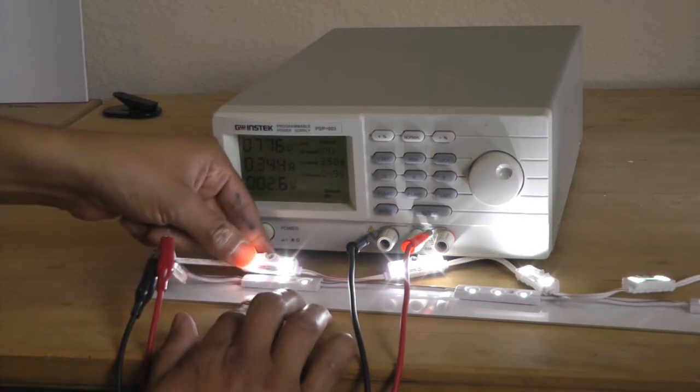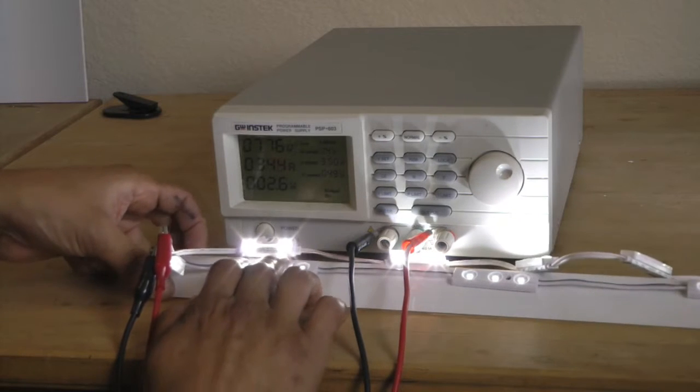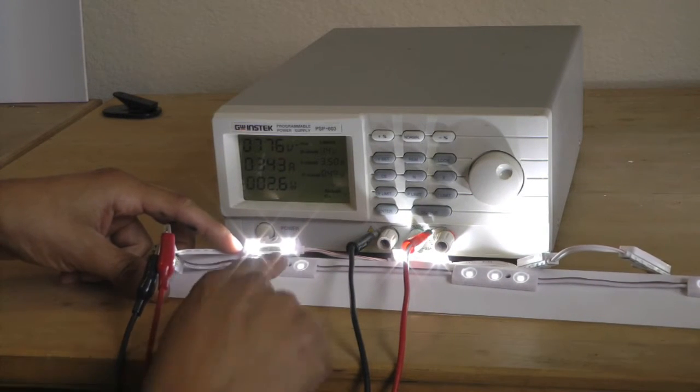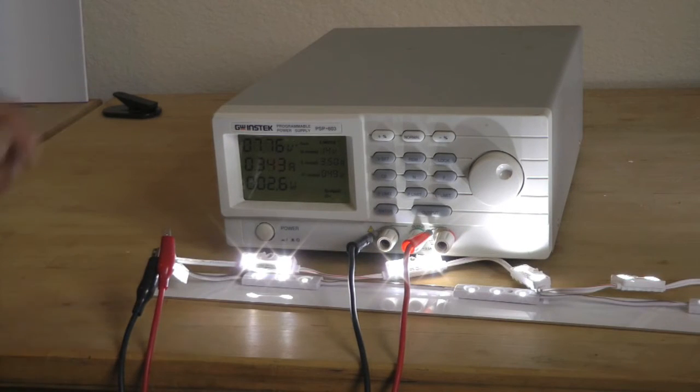So as you can see, the constant current is going to try and stay at 12. It's regulated. So there's an onboard driver on there. Whereas the constant voltage, the light output drops.